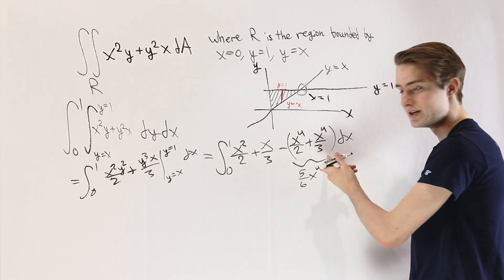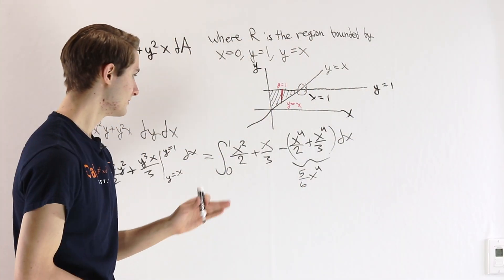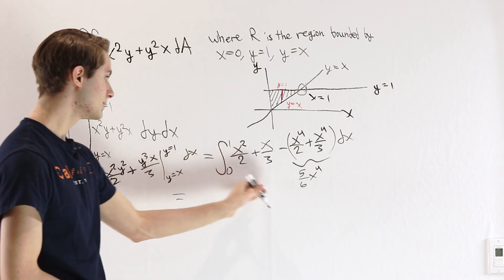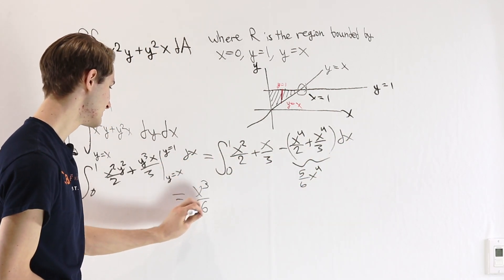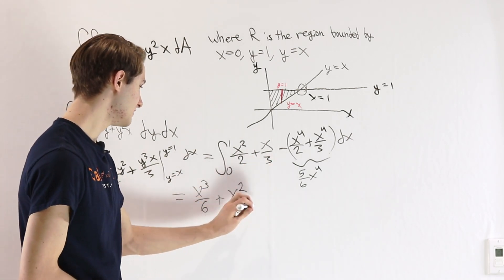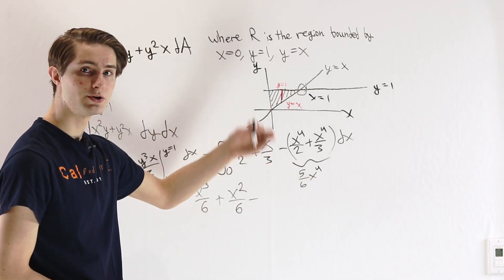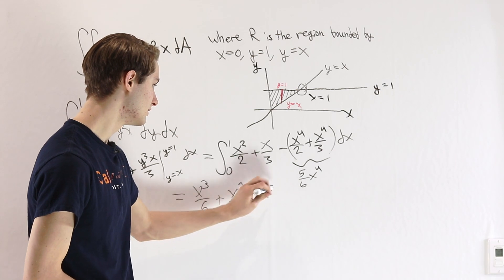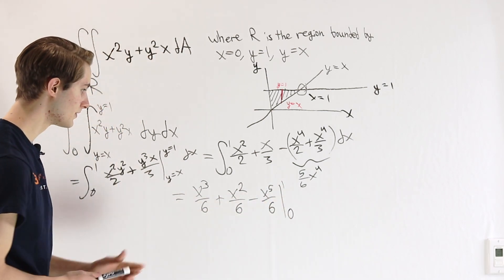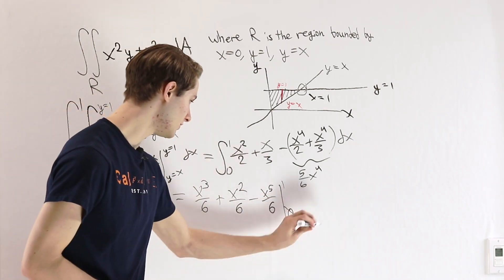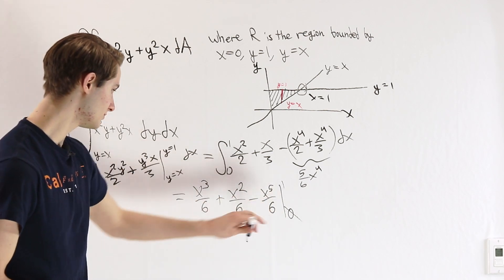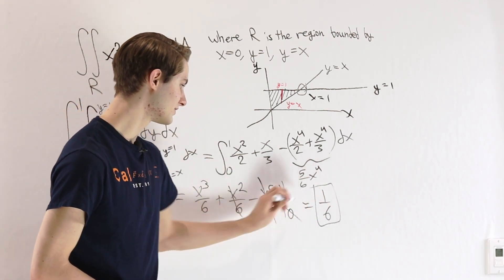On the inside this simplifies to x squared over two plus x over three minus five sixths x to the fourth. From here we just have three different instances of the power rule. Integrating x squared over two with respect to x gives x cubed over six. The next term gives x squared over six. And integrating five sixths x to the fourth gives x to the fifth over six. We evaluate from zero to one — plugging in x equals zero makes everything vanish, so we plug in x equals one: one sixth plus one sixth minus one sixth. These simplify and we get one sixth as our answer.